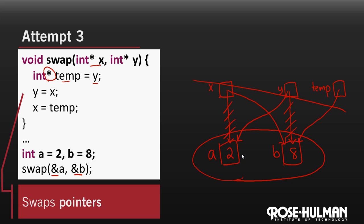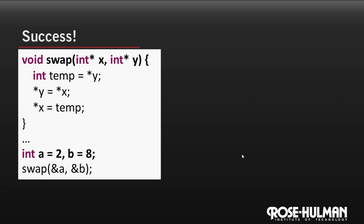Let's take a look at a correct swap. So we have, for the last time, a and b are 2 and 8. Pass the addresses into x and y. The pointers that are the parameters. Now this time, temp is just simply an int.